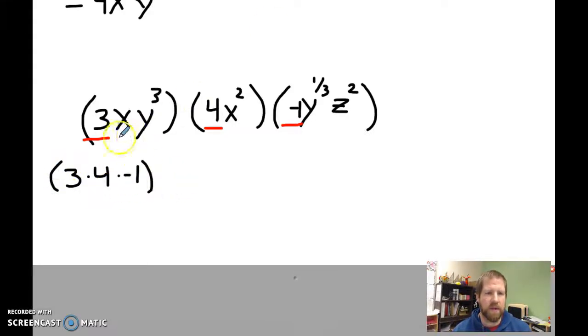And then go through for my x's. I've got a 1x, I've got an x squared, and I've got no x there. So I'd have x times x squared, and I've got y to the third and y to the one-third. Y to the third times y to the one-third.